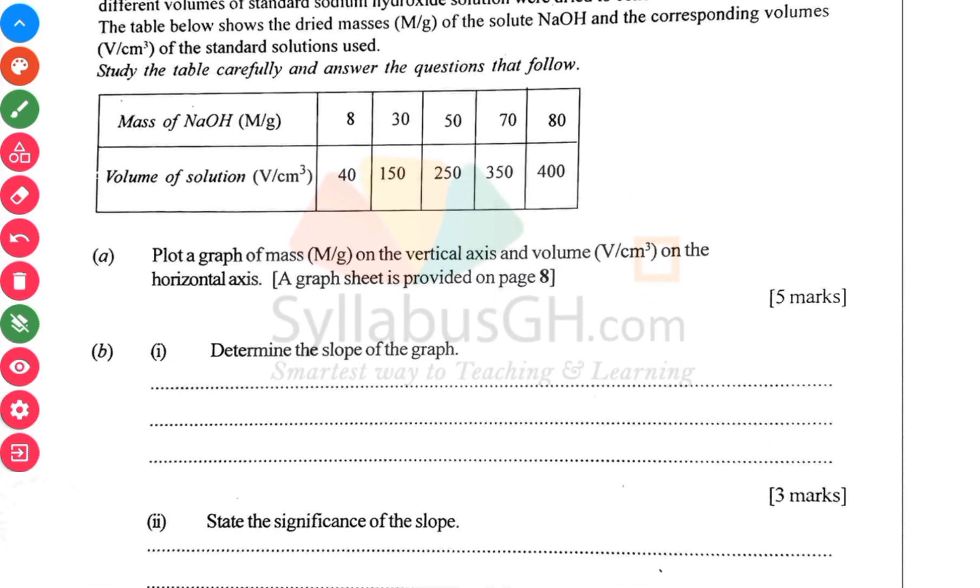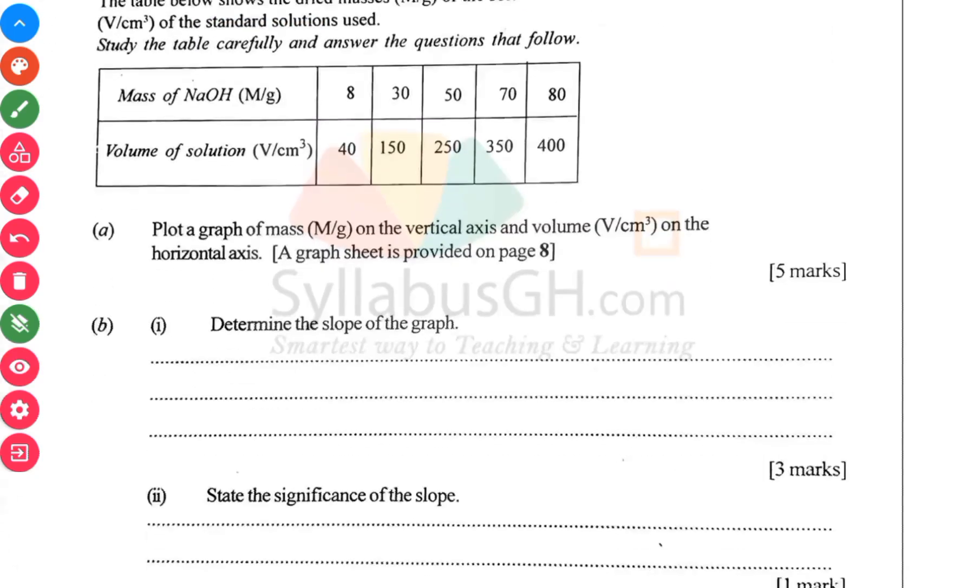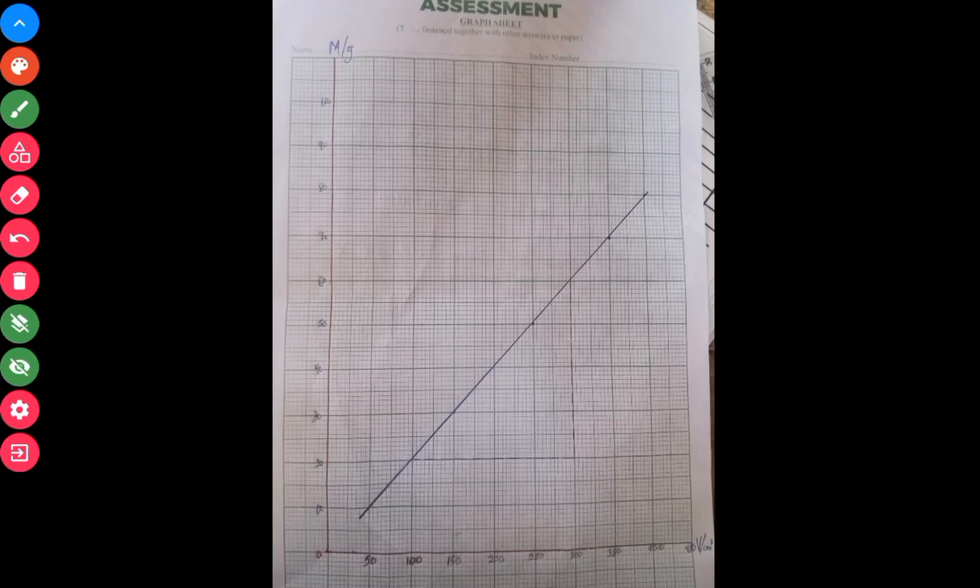Question 4: in an experiment to determine the molar concentration of a standard solution in the laboratory, different volumes of standard sodium hydroxide were dried to constant masses. The table below shows the dried mass in grams of the sodium hydroxide and its corresponding volume of standard solution used. When you plot the values, this is what you are going to get. This is what I had after plotting the values. The question was asked to find the slope, so I did my short dashes as you can see.